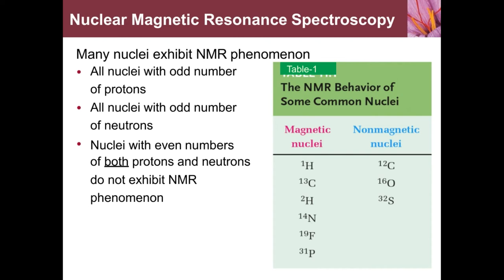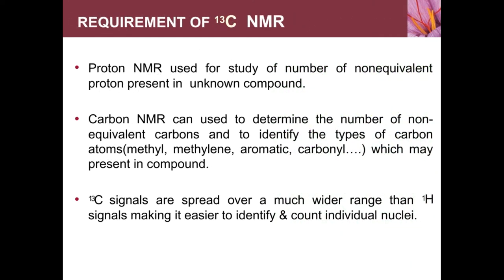Just look at the table showing nuclei with odd number of protons. What is the basic requirement for C13 NMR? Proton NMR is used to study the number of non-equivalent protons present in unknown organic compounds. Carbon NMR can be used to determine the number of non-equivalent carbons and identify the types of carbon — methyl, methylene, aromatic, carbonyl, and methine — present in organic compounds.